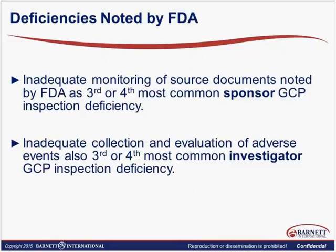The FDA cites inadequate monitoring of source documents as the third and fourth most common sponsor inspection deficiency, which makes it a pretty significant deficiency. FDA inspectors also indicate that inadequate collection and evaluation of adverse events is the third and fourth most common investigator GCP inspection deficiency. The CRA's position is one that can ensure the investigator is properly documenting and reporting events so that the sponsor can verify the events and collect the safety information for analysis.